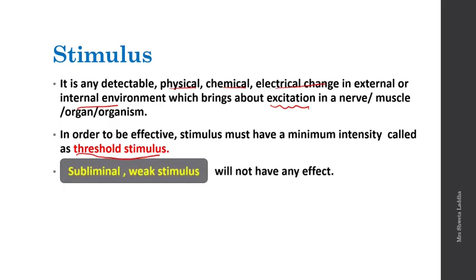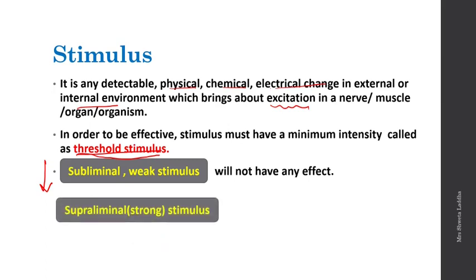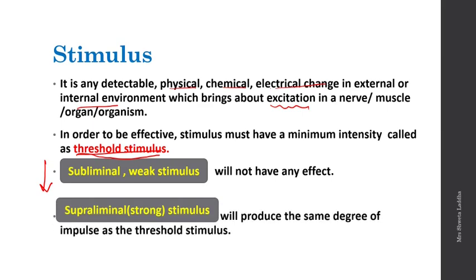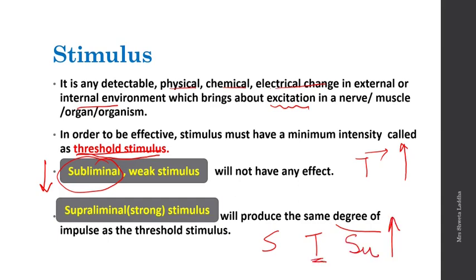A subliminal or weak stimulus is not effective — it will not carry out any conduction of the nerve impulse. Subliminal stimulus is always less than the threshold stimulus, lesser than the minimum intensity needed for conduction. Supraliminal means a strong stimulus — it produces the same degree of impulse as the threshold. From threshold onwards, all supraliminal stimuli carry out the same degree of impulse. Below threshold (subliminal), no nerve impulse is conducted. These three terms are important: subliminal (weak), threshold (minimum), and supraliminal (greater than threshold).